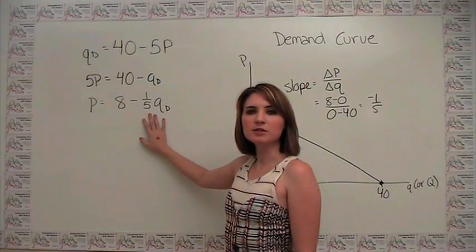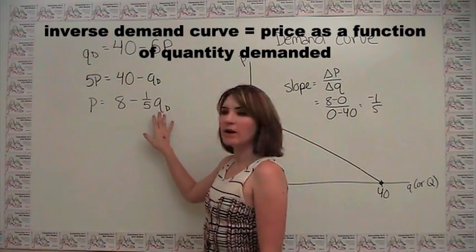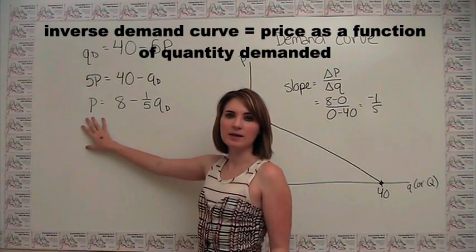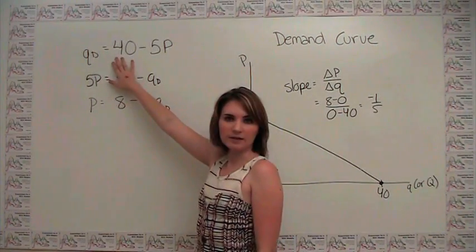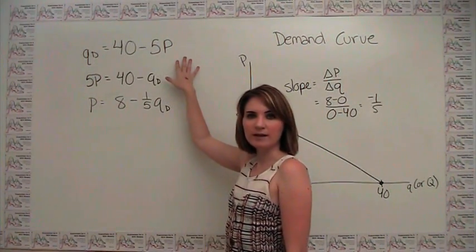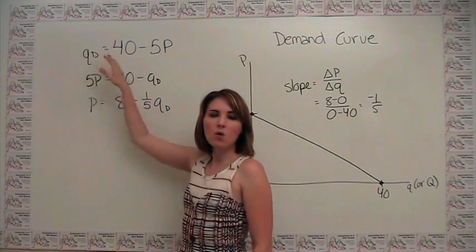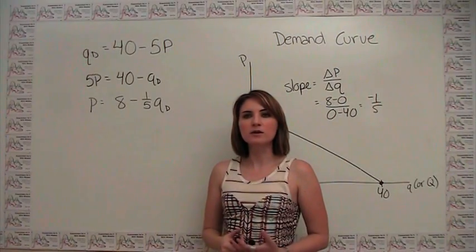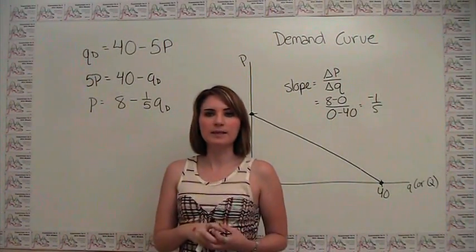This is referred to as the inverse demand curve, and it really answers the question, for any given quantity, what is the price that we can charge such that we have that many customers lining up at the door? Whereas the regular demand curve says for any given price, how many units of that item are demanded. We're not really trying to imply a causal relationship in one way or the other, we're rather just trying to say that price and quantity are correlated in this way.